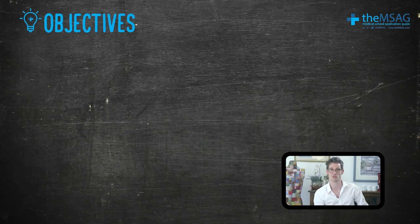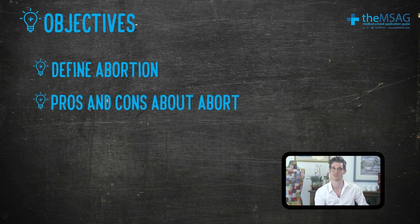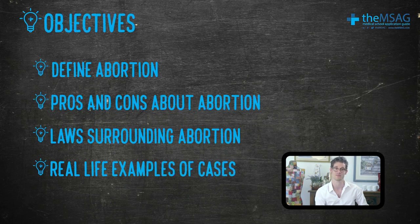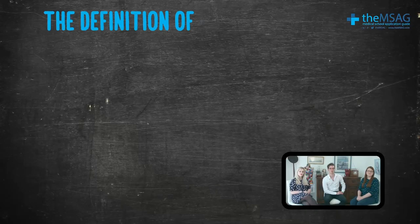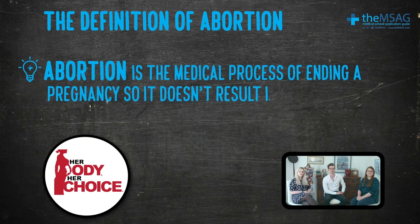By the end of this video you should be able to define what abortion means, discuss the pros and cons of abortion in relation to the four pillars of medical ethics, and have a brief understanding of the laws surrounding abortion in the UK and abroad, as well as being able to give real-life examples of cases. An abortion is the medical process of ending a pregnancy so it doesn't result in the birth of a baby. It's also sometimes known as termination.